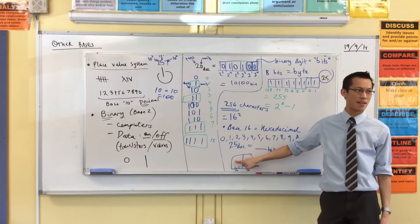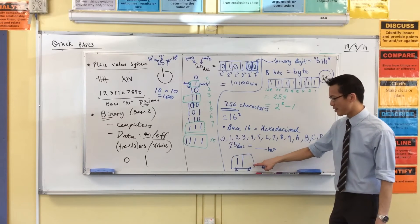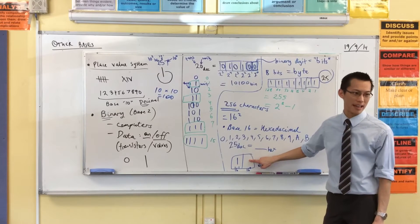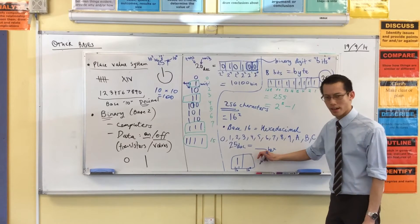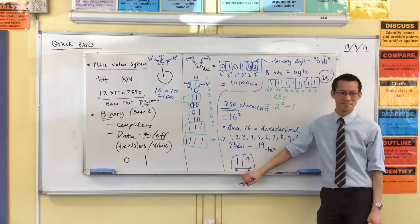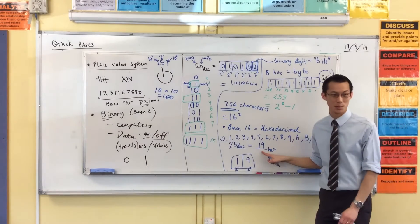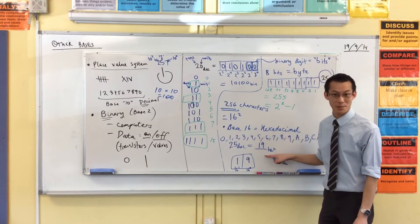How many 16s are there in 25? There is 1. How many 1s are left behind? There are 9, right? That's a bit weird, right? This is 25 in decimal if I write it in hexadecimal.